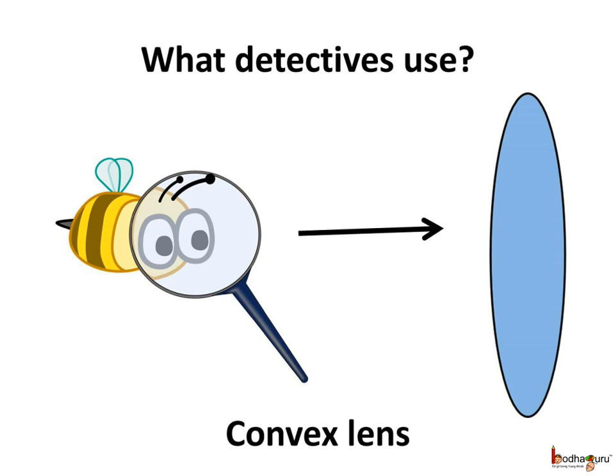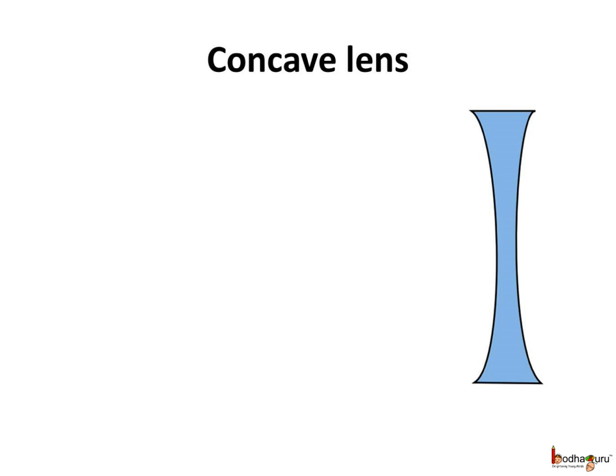The lens which a detective uses to see things larger is thicker in the middle than at the edges. This type of lens is called a convex lens. There is one more kind of lens which is thicker at the edges than in the middle. This is called a concave lens.